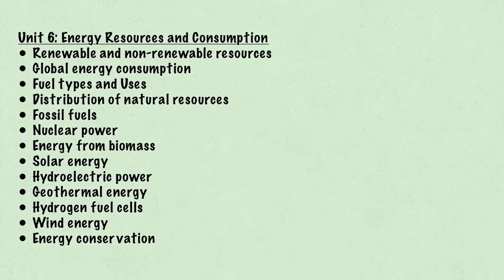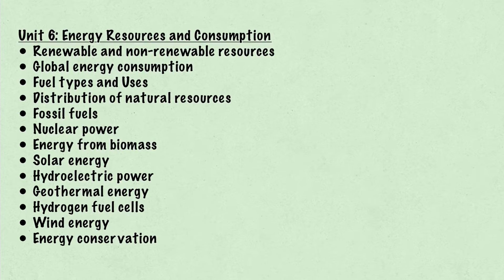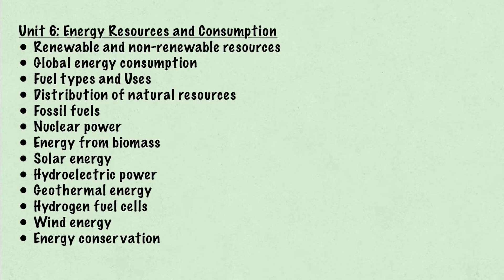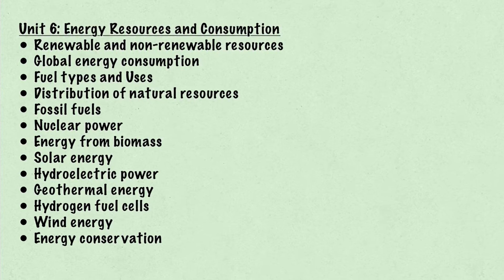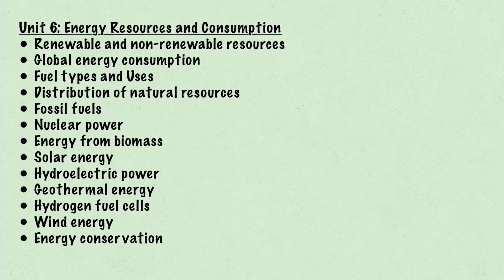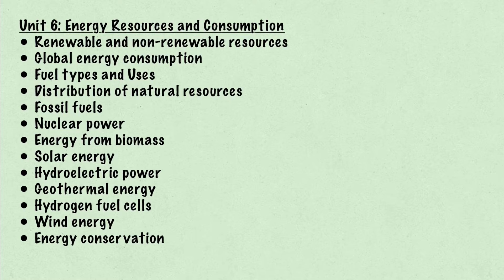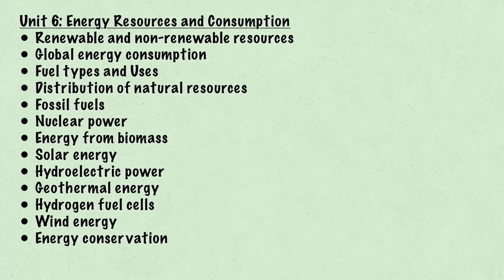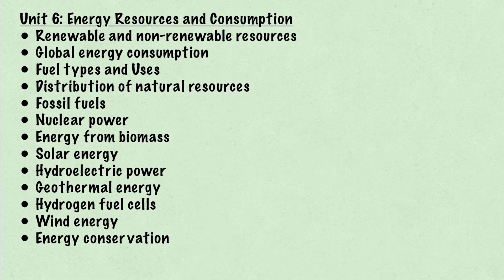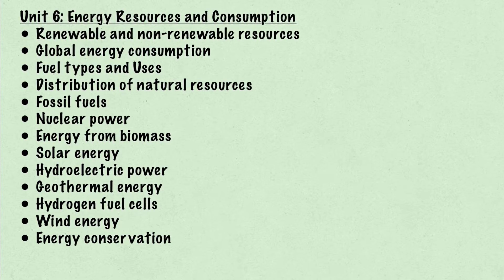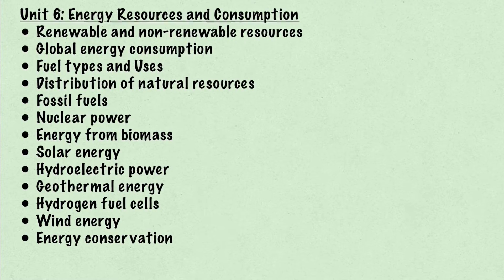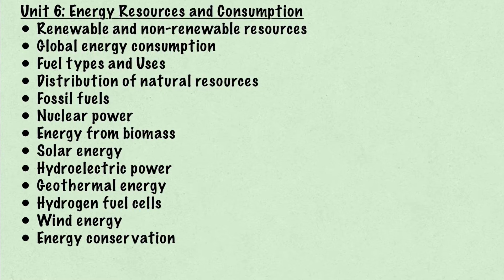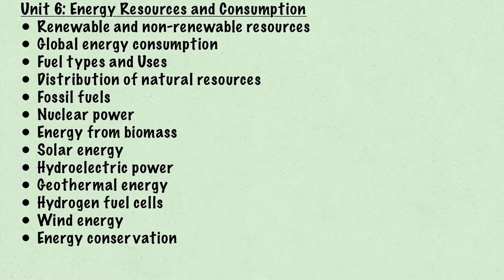Unit 6 is composed of ideas of energy resources and consumption, including renewable and non-renewable resources, global energy consumption, fuel types and uses, distribution of natural resources, fossil fuels, nuclear power, energy from biomass, solar energy, hydroelectric power, geothermal energy, hydrogen fuel cells, wind energy, and finally energy conservation.